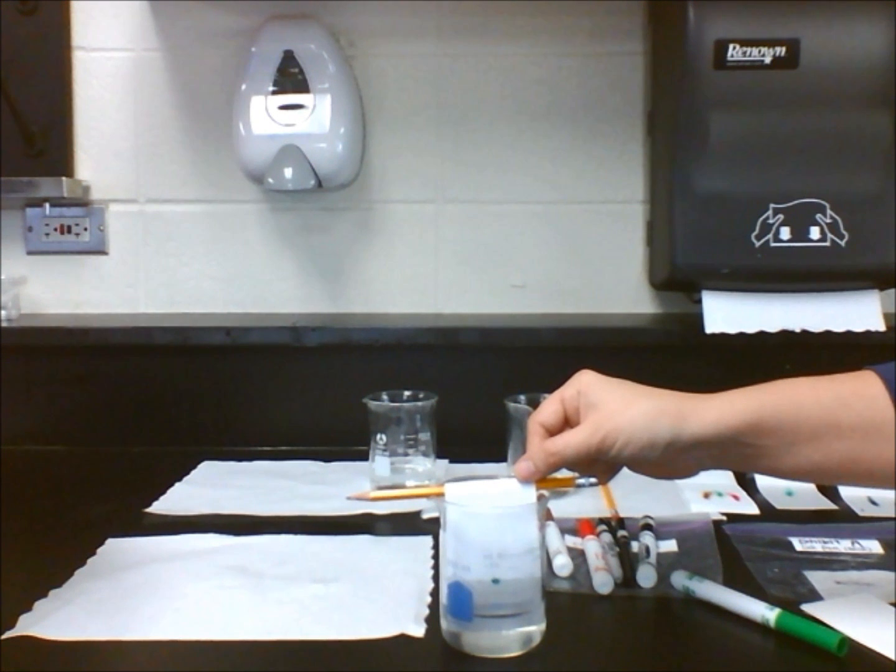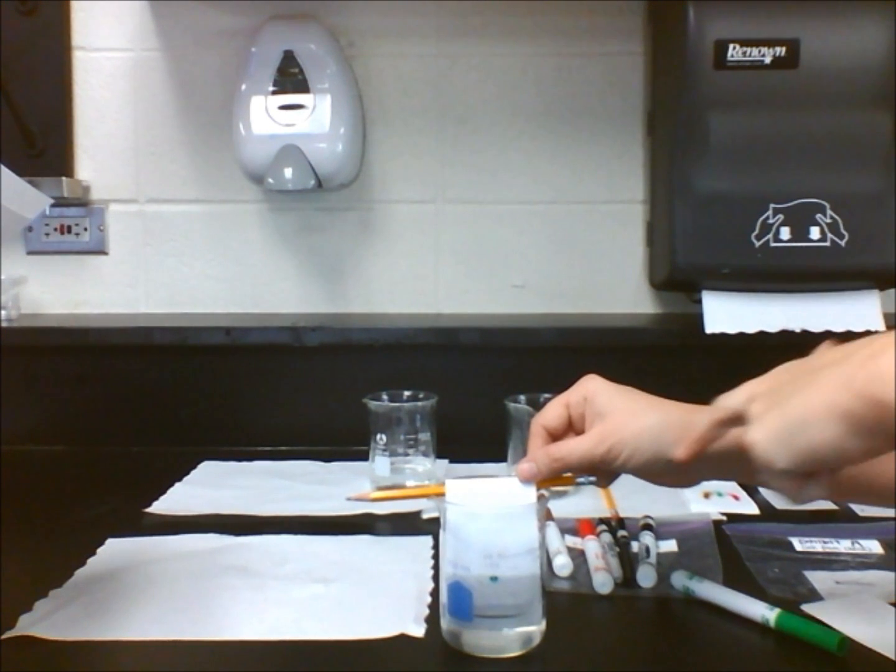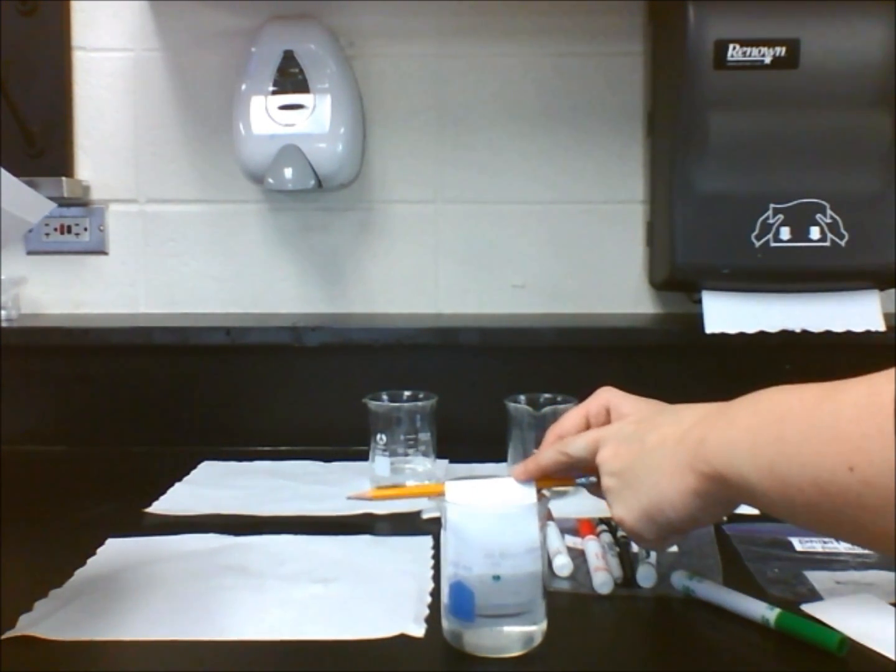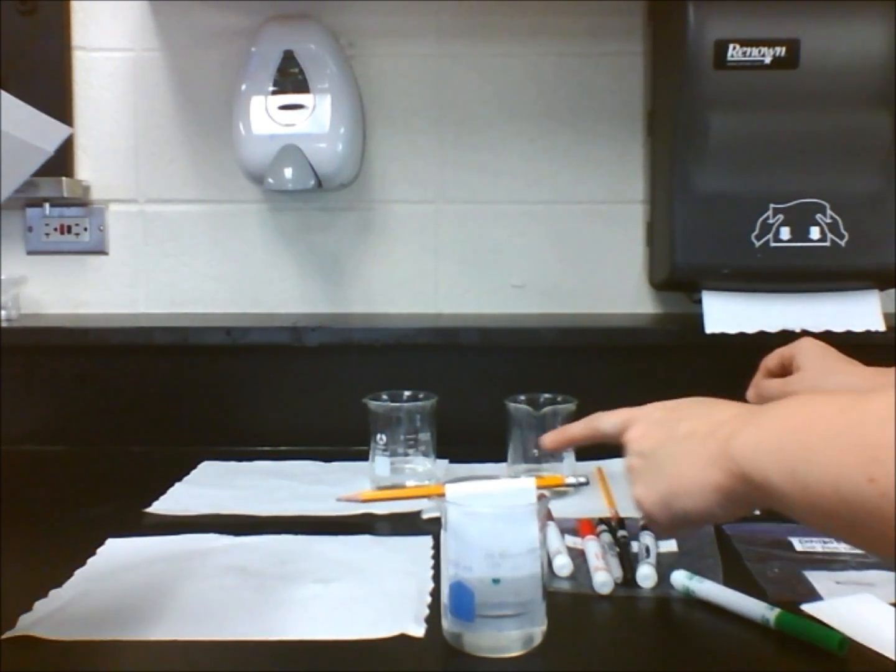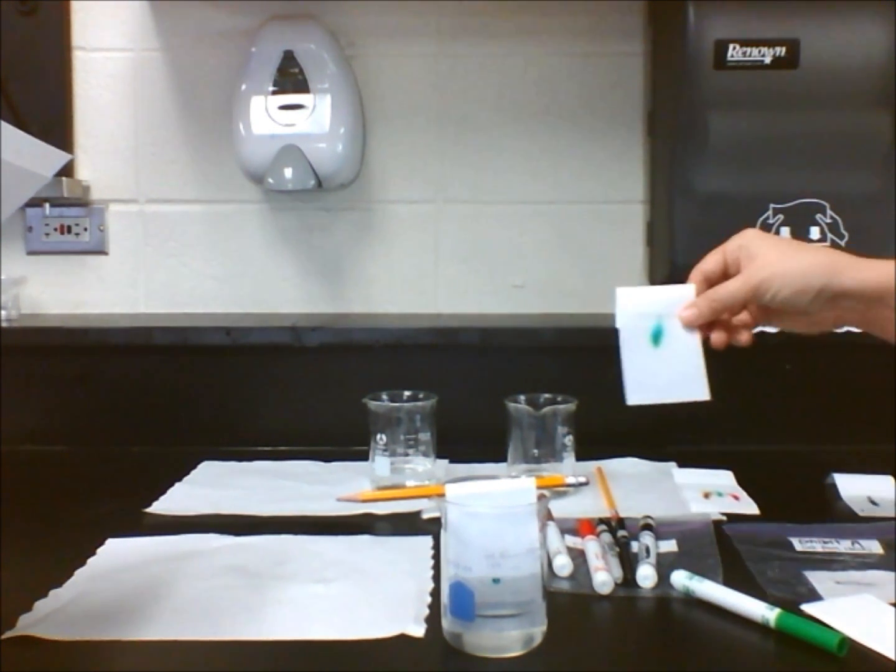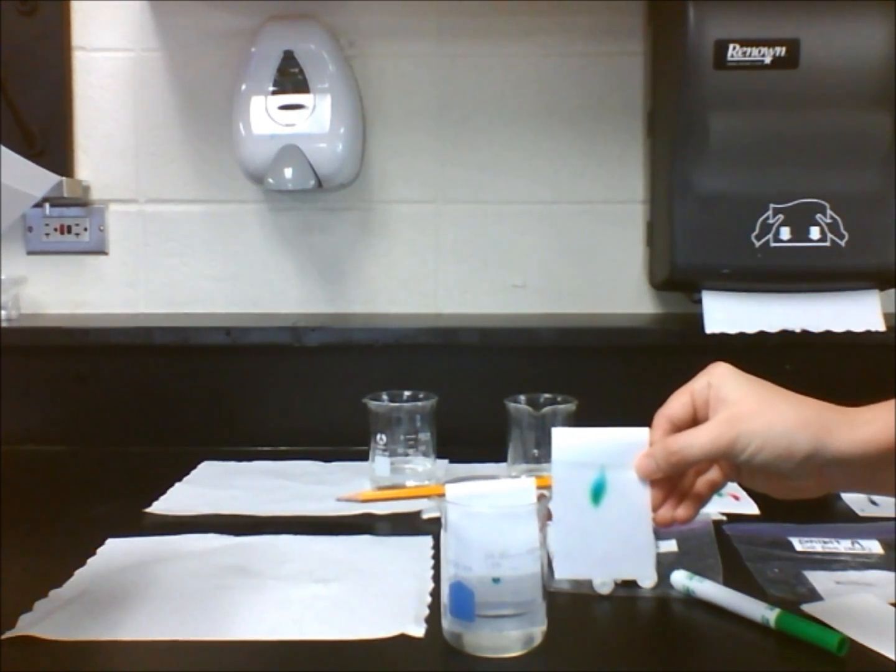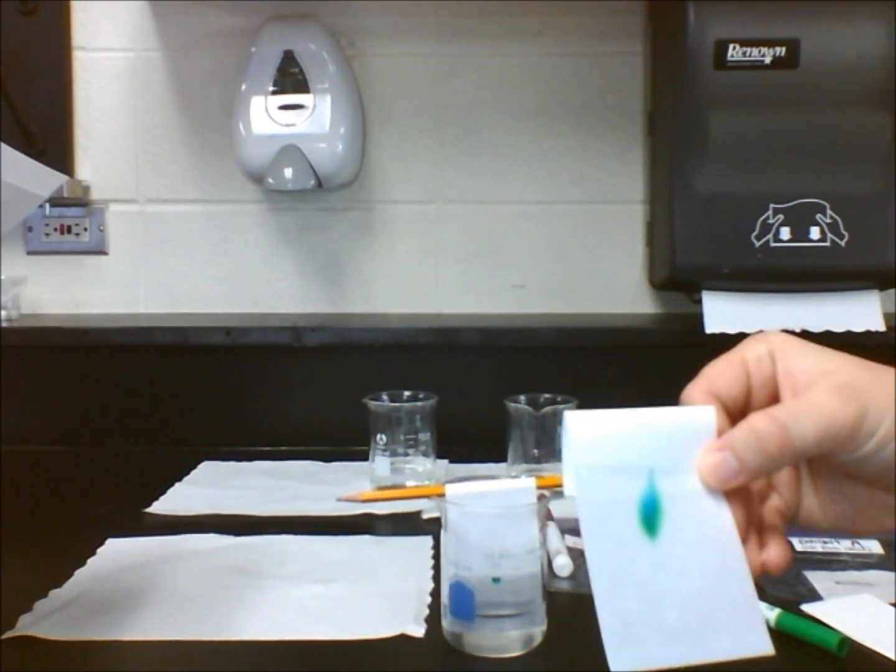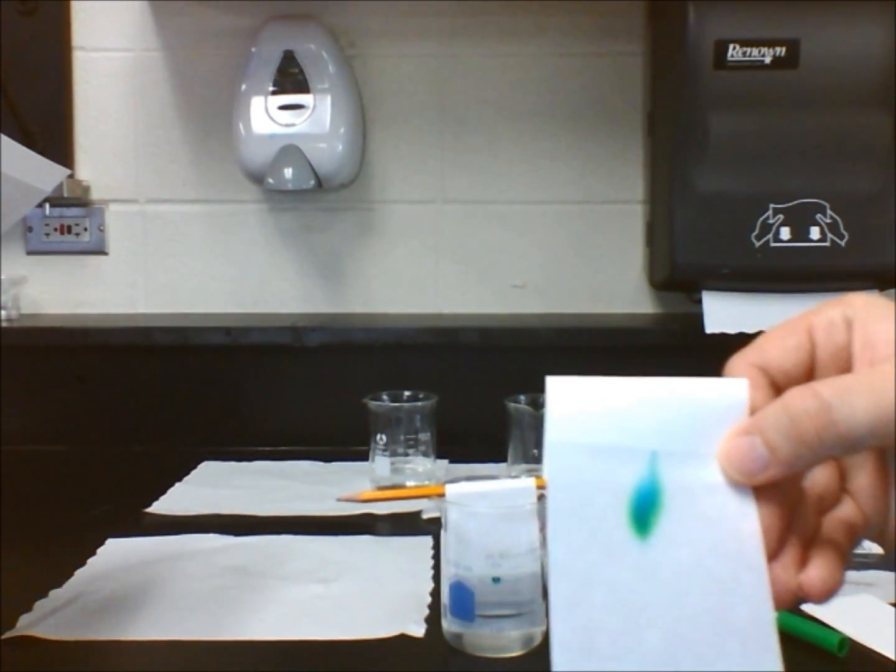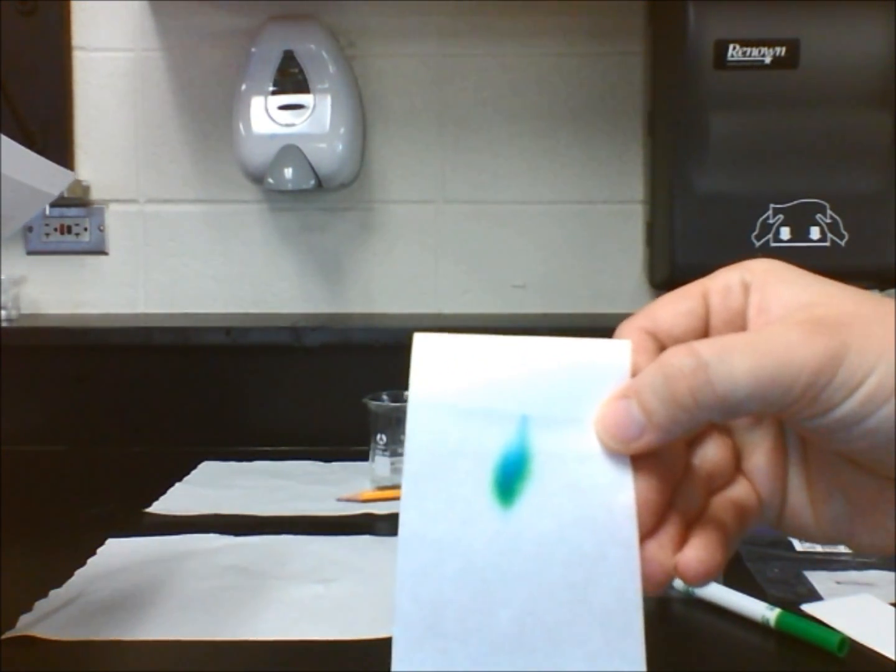After a few minutes, you will notice something happening to the green ink spot. The spot has moved up from the bottom of the paper. You will also notice a couple new colors on the chromatography paper. There is blue ink at the top and a little bit of yellow ink at the bottom.